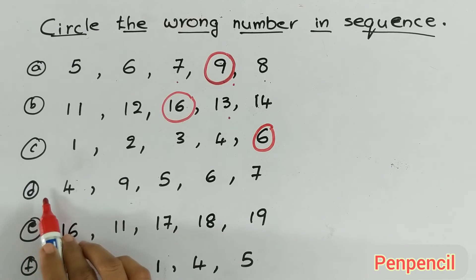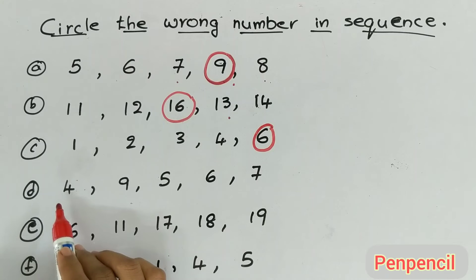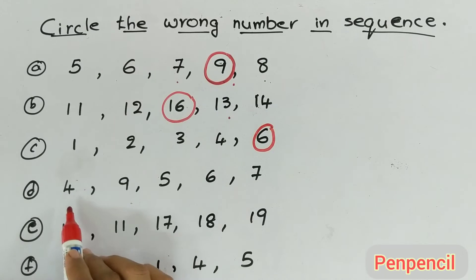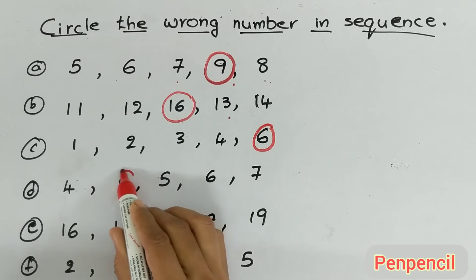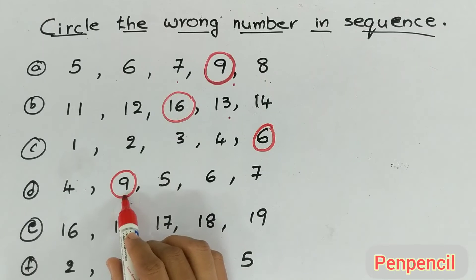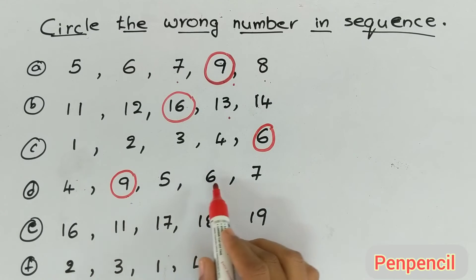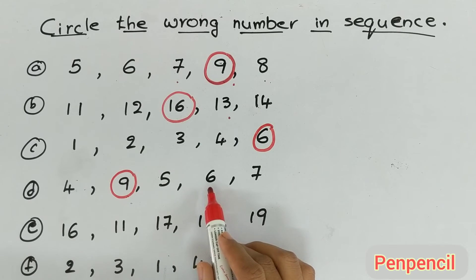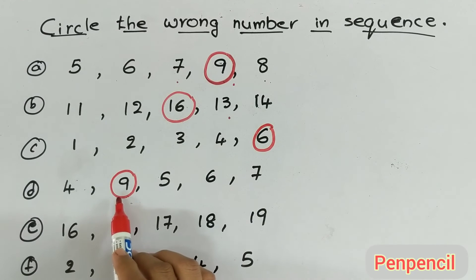Now next one — come on, be fast kids, quickly do it before me. Next one is 4. What is the number after 4? 9 — no, that is the wrong answer. 9 is the wrong number. What is the number after 4? 5. After 5? 6. Number after 6? 7. So 9 is the wrong number.